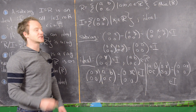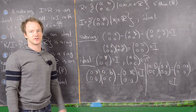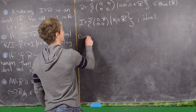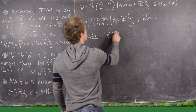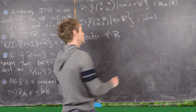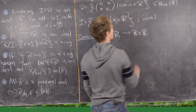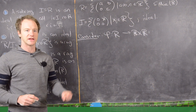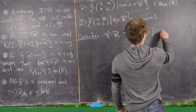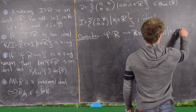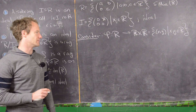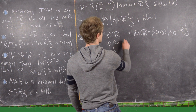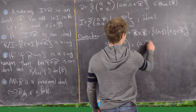Now we're going to do an alternative proof that I is an ideal. We'll consider the map φ from R — the ring of upper triangular matrices — to ℝ×ℝ, where multiplication and addition are given component-wise. Define φ([a,b;0,c]) = (a, c).